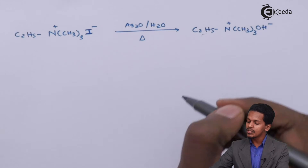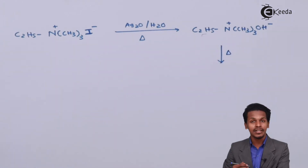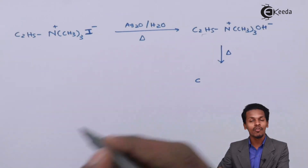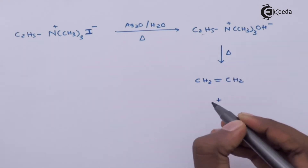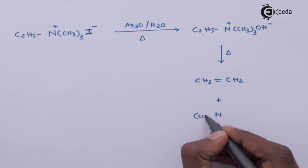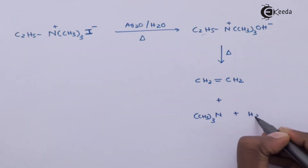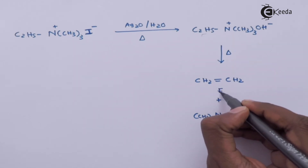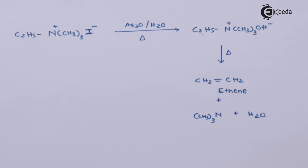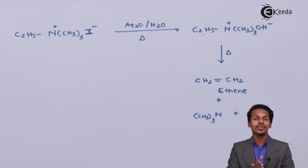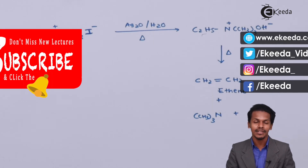Heating the ethyl trimethyl ammonium hydroxide product gives the main product: CH₂=CH₂ (ethylene), along with byproducts N(CH₃)₃ and H₂O. This demonstrates the Hoffman elimination reaction. Using different alkyl groups, we can also prepare unsymmetrical alkenes. Thank you for watching — I hope you now understand Hoffman elimination reaction. Don't forget to subscribe to the E-Keta channel.